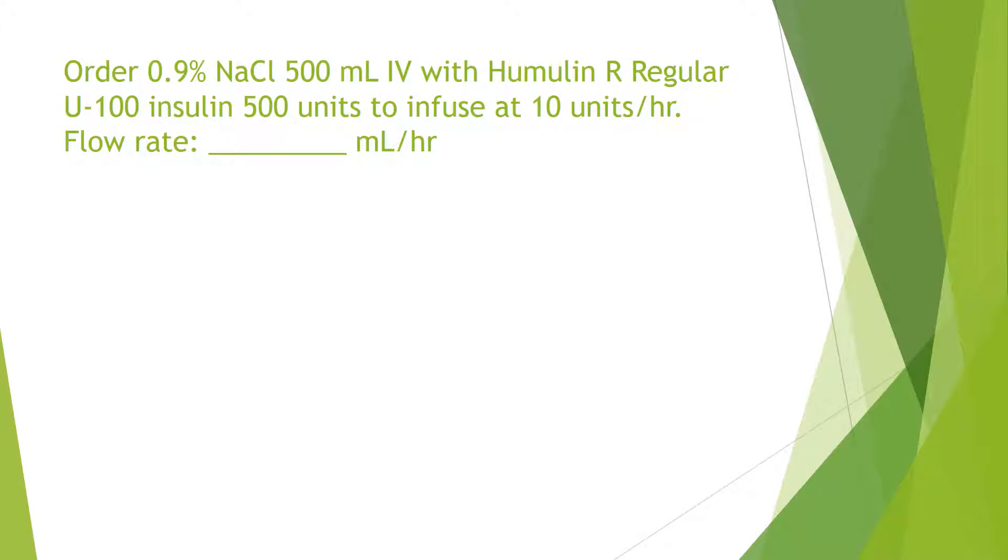This question says 0.9% sodium chloride, 500 milliliters IV with humulin R regular U 100 insulin 500 units to infuse at 10 units per hour. Lots of numbers here. So let's first eliminate the numbers that we don't really need. These just tell you the different things that aren't necessarily important, but look, this is what's in the IV. The 500 milliliter IV contains 500 units of the U 100 insulin. And then it's infusing at 10 units per hour. So I'm going to remember milliliters on top. So 500 milliliters over the 500 units because they're in the same bag. That's the main reason I do that. But that's the reason I write it that way is because this is in the same IV bag. I keep them together.